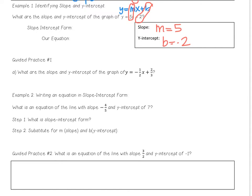Guided practice number 1: I give you an equation, I want you to give me the slope — which is the coefficient of the x term — and then the y-intercept, which is the constant. Pause the video and resume when you've got your answers. Your slope should be negative one-half, and your y-intercept should be two-thirds.